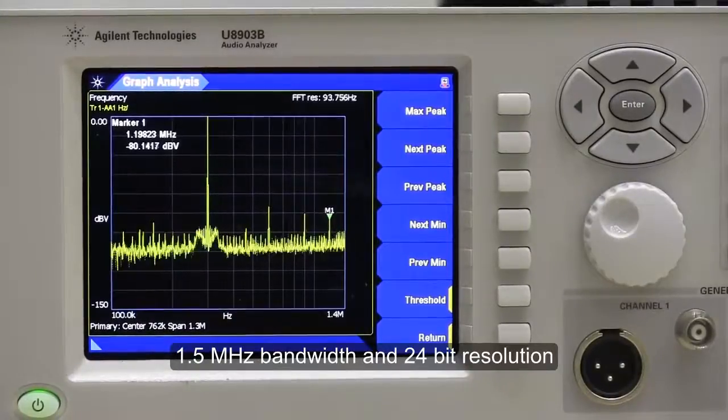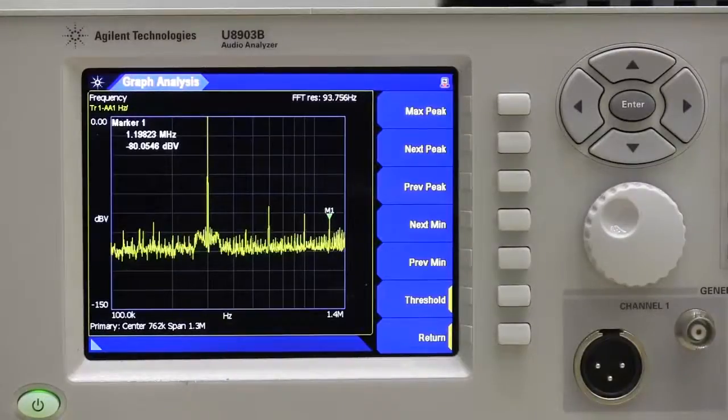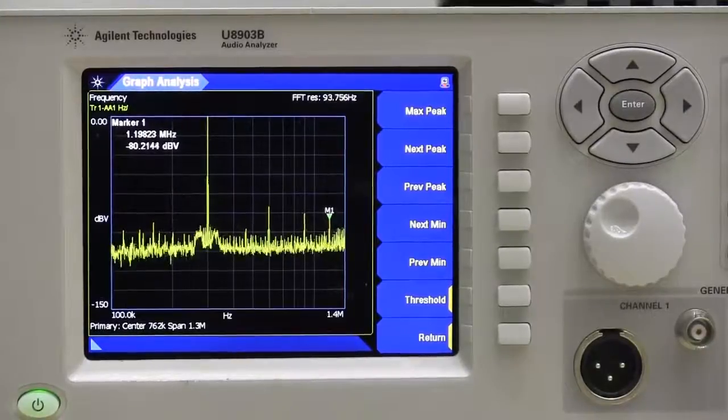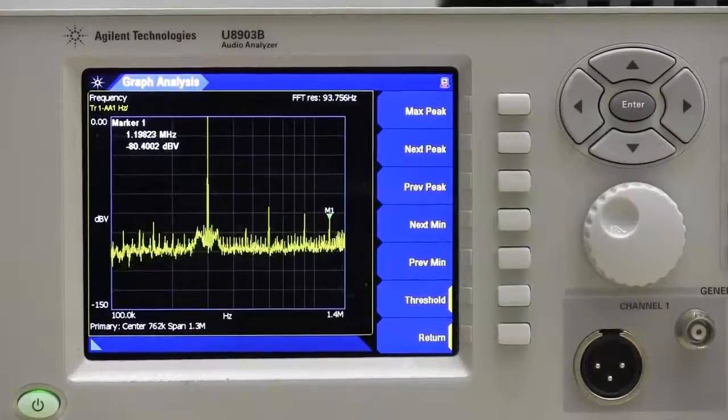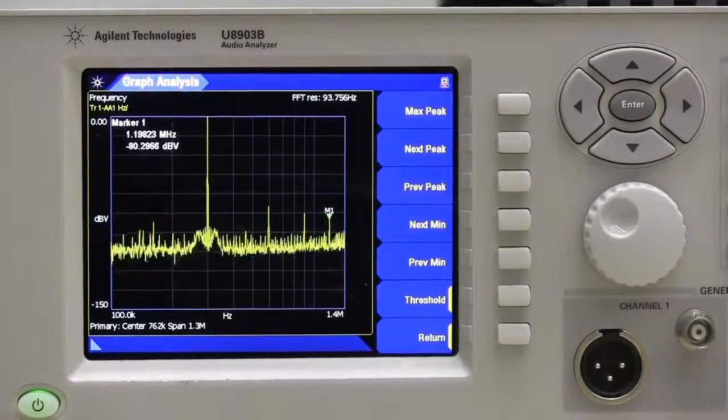This expanded bandwidth allows the audio analyzer to maintain high accuracy even when monitoring Class-D amplifiers or switching supplies, which often produce signal spikes far outside the bandwidth limit of conventional audio analyzers, typically at 100 kHz or less.